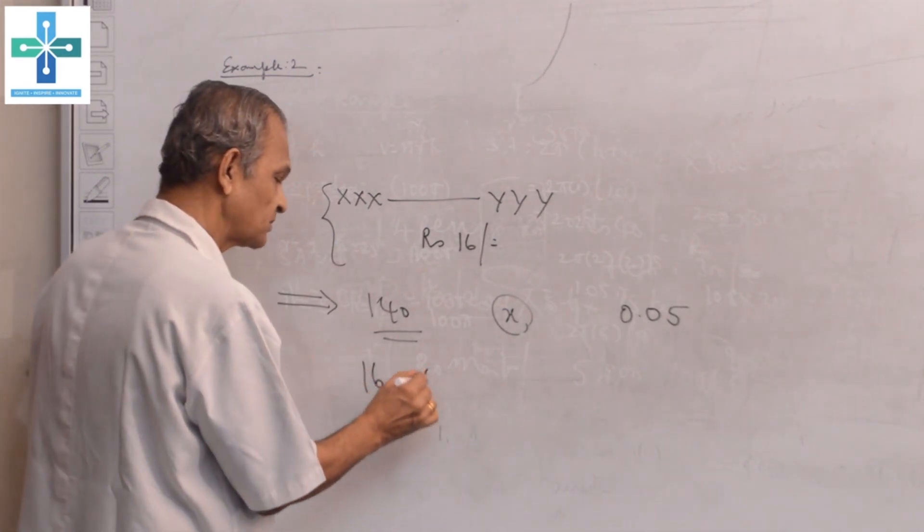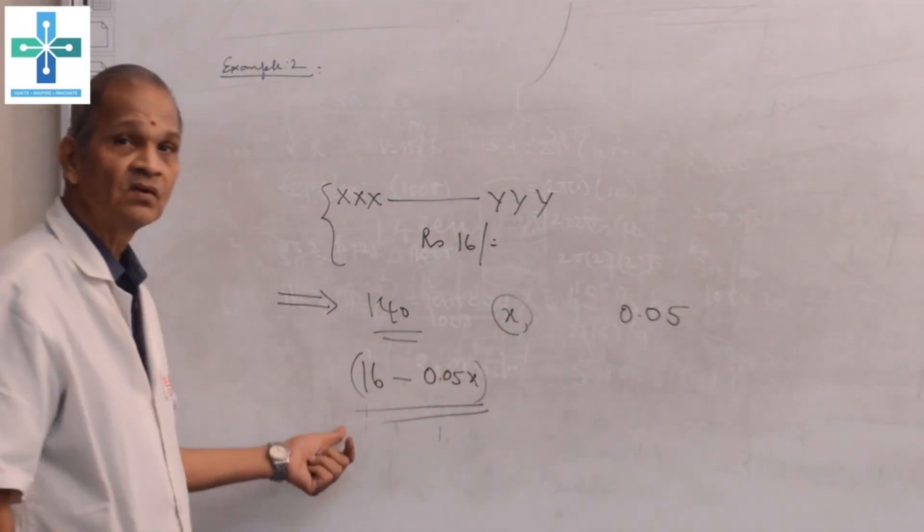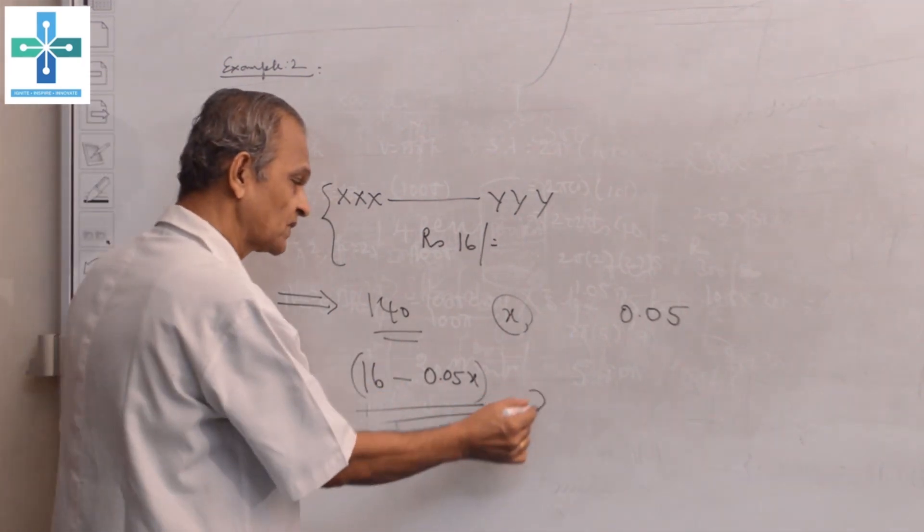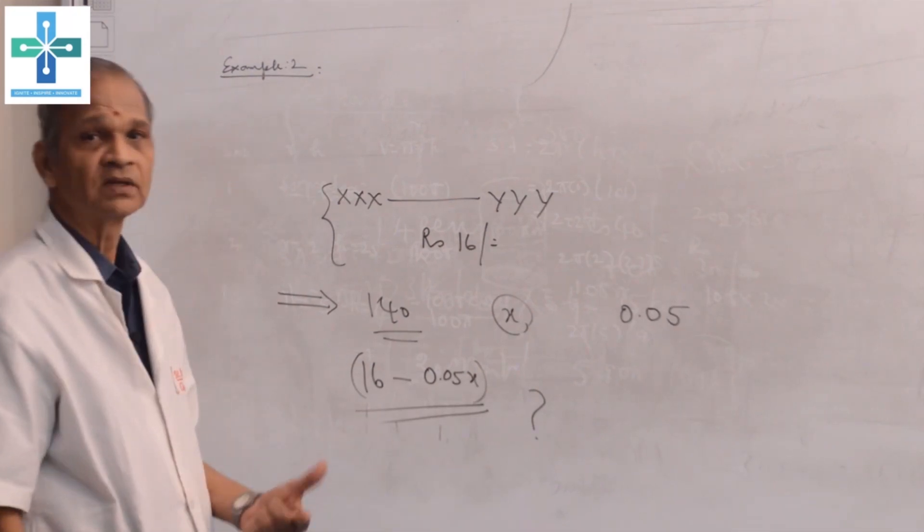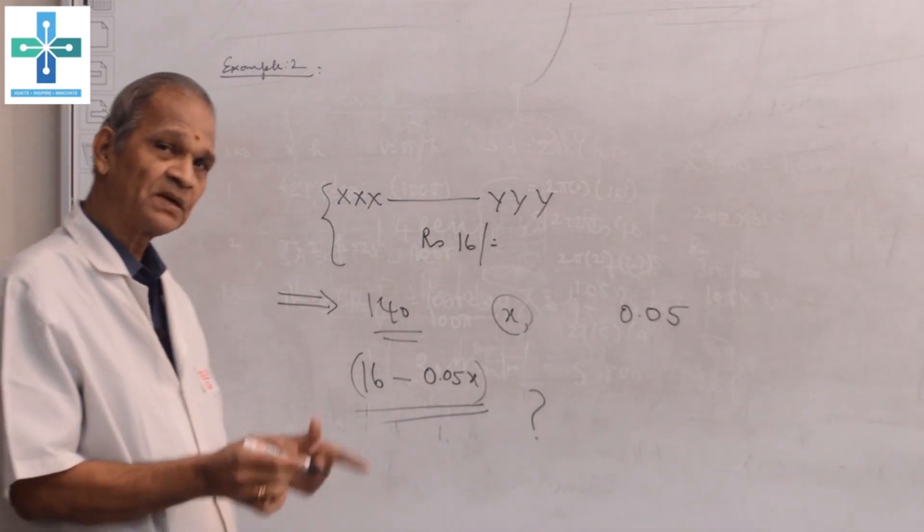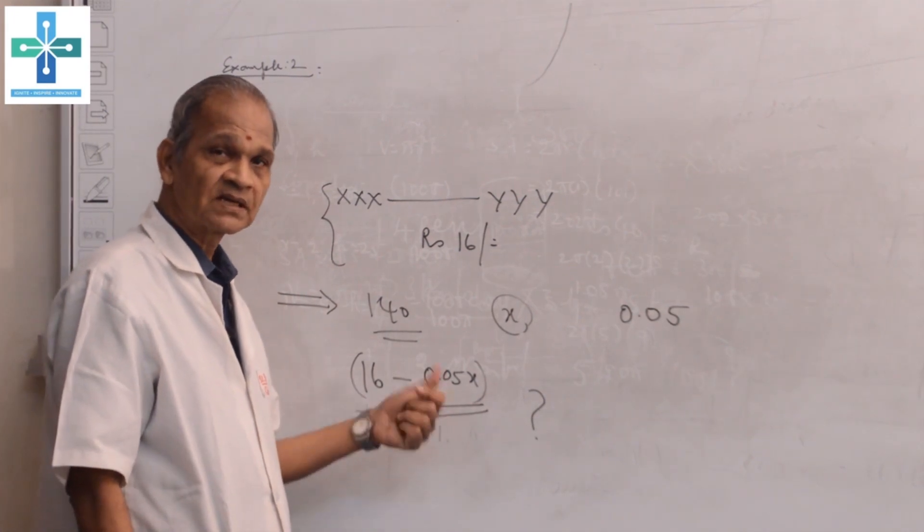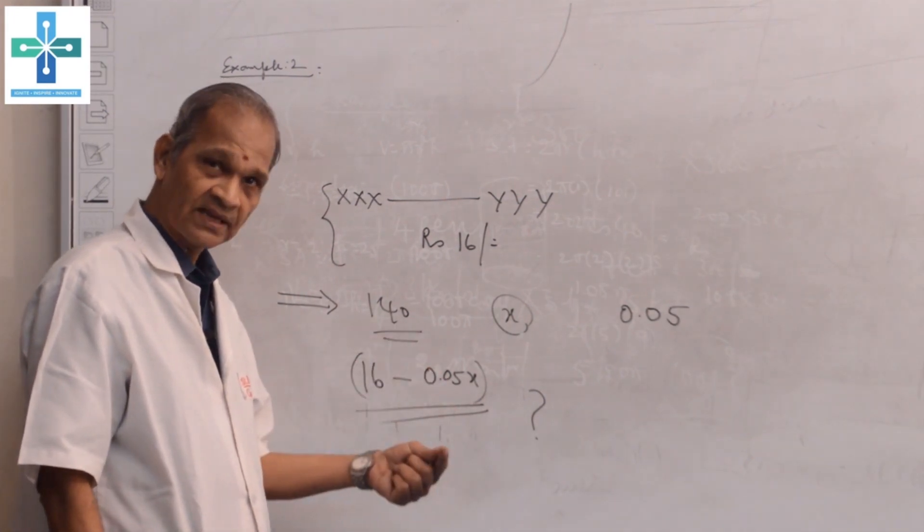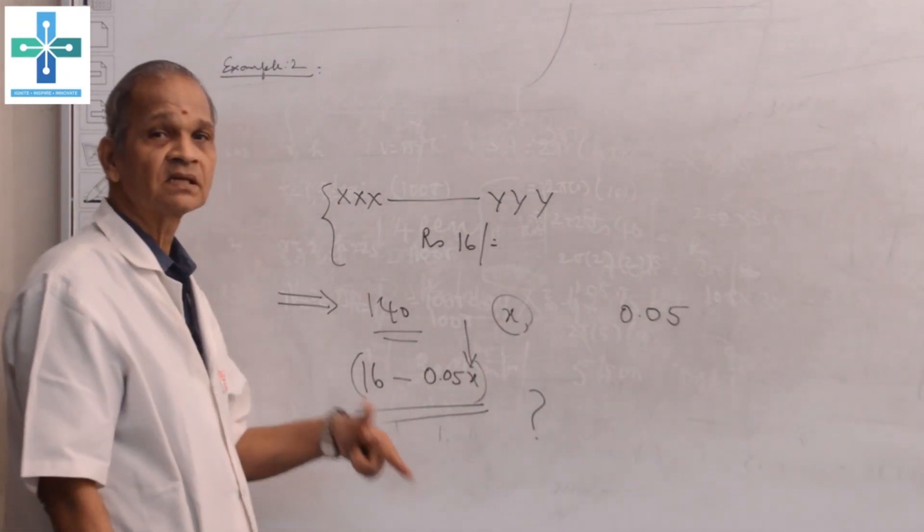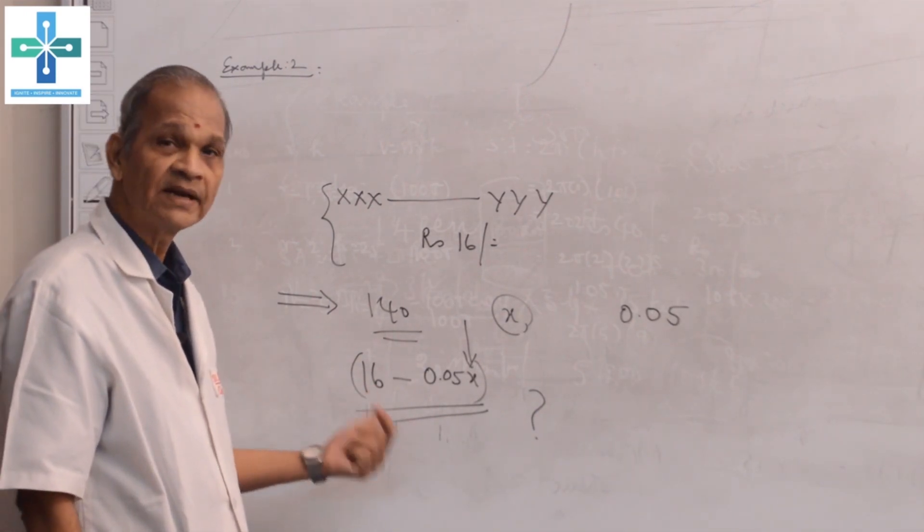The ticket price is 16 rupees minus 0.05 times X for all passengers traveling on that particular day. The question is, whether this transport owner will get the maximum profit? Whether the transport owner has to stop at somewhere giving this concession? If the concession is not stopped at one stage, what will happen? This we cannot go by trial method. This is only with the help of calculus.